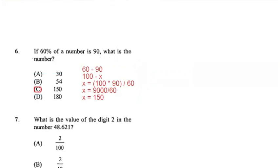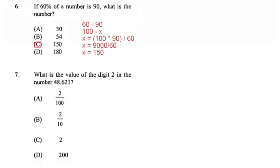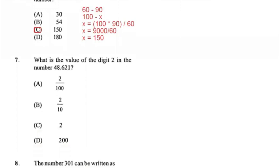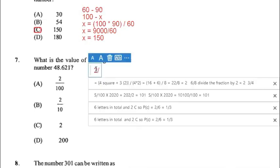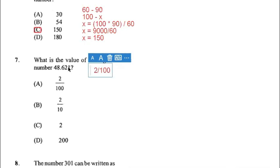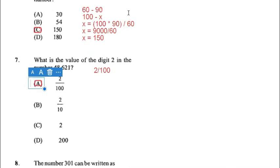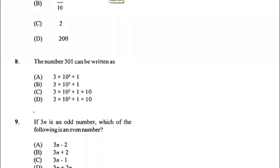Number seven: what is the value of the digit 2 in the number 48.621? Remember, decimal places start at tenths, hundredths, thousandths. The digit 2 occupies the hundredths position, so it equals 2 over 100. No need to simplify as 2 over 100 is given as one of the possible answers, so the answer for seven is A.